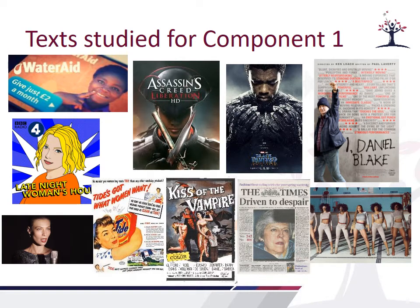Here are some of the texts we study for component one. We tend to start looking at advertising — some texts are historical, like a 1950s advert for Tide, and then more modern advertising such as a Water Aid charity campaign. We look at film marketing, studying I, Daniel Blake and Black Panther as two very different sorts of films and how they are marketed. We look at radio — Late Night Woman's Hour is our radio show. Assassin's Creed is the video game we focus on. We also look at newspapers, with The Times being one we focus on. For music video, we look at two very different music videos — a more mainstream one, Beyoncé, and then a more independent alternative music video, a song called Riptide.